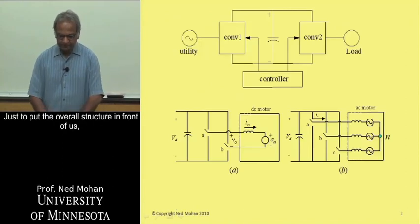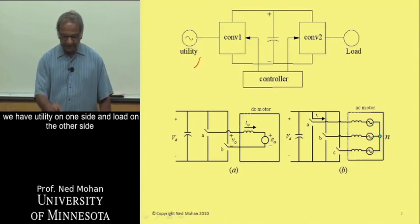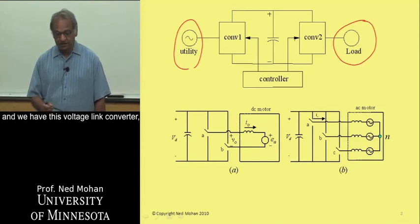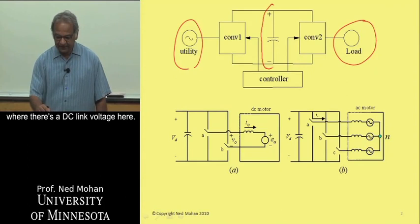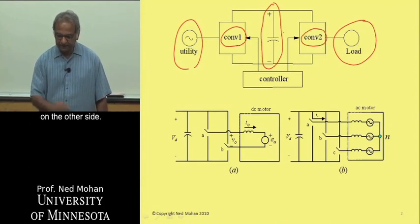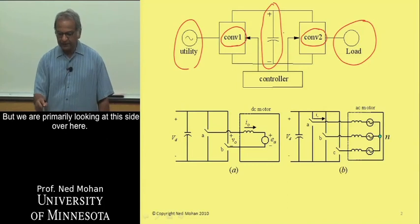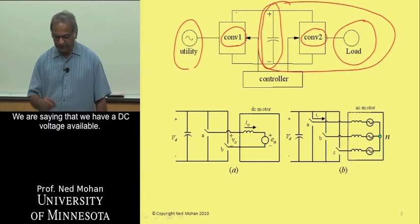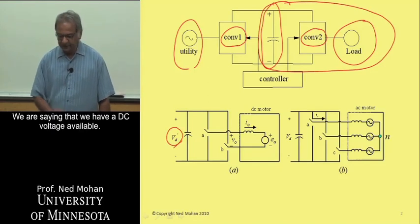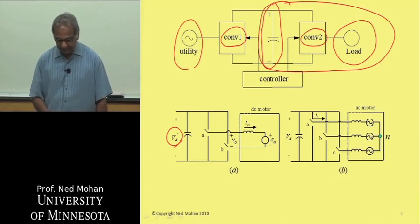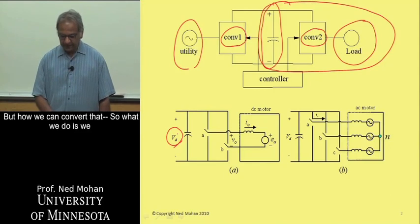Just to put the overall structure in front of us, we have utility on one side and load on the other side, and we have this voltage link converter where there is a DC link voltage here, and it's converted — converter one on one side and converter two on the other side. But we are primarily looking at this side over here, where we are saying that let's say we have a DC voltage available. How it is converted is something else, but how we can convert that.